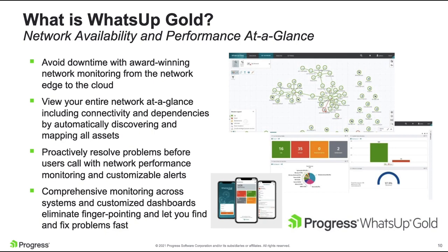Obviously, we have a dog in this hunt, so I'll be fairly straightforward and make it clear that everything I just described is something you can do with WhatsUp Gold, a network availability and performance monitoring solution. We've been around for quite some time and are very popular. WhatsUp Gold is easy to use, and the main value is to find and fix problems fast. It is a diagnostic tool that allows you to see what's happening in your network, get alerted in any way you want to any issues, and hopefully resolve them before your end users notice. It's completely vendor agnostic, and we can show you everything in context.